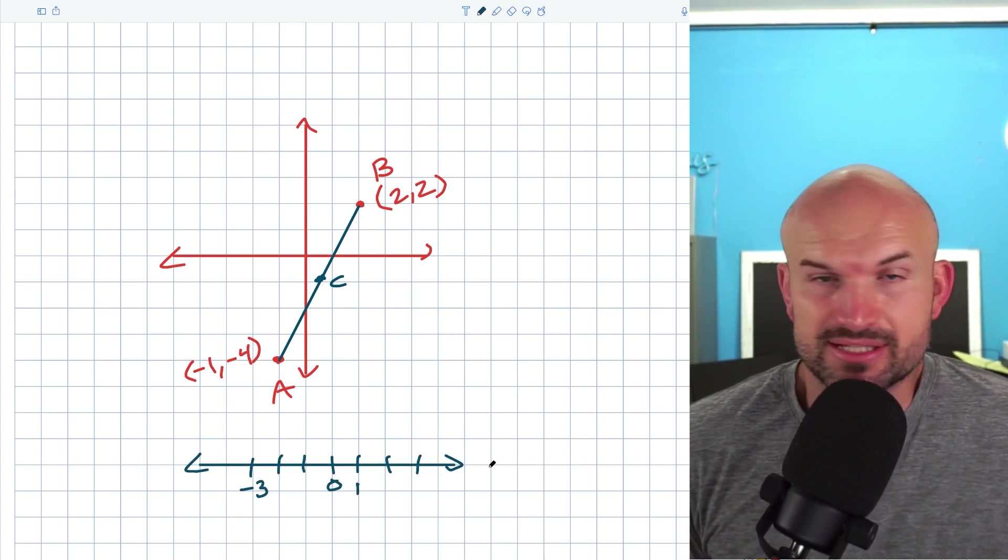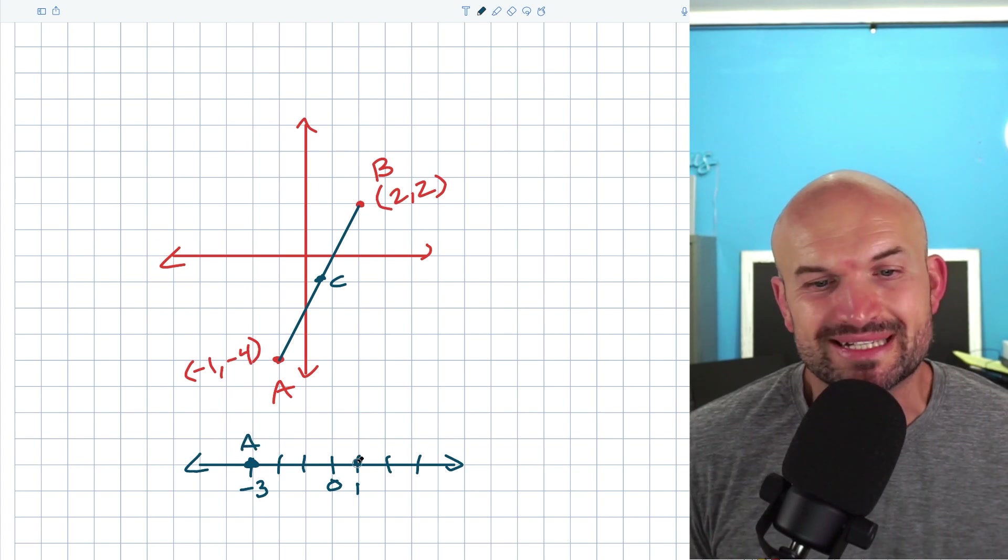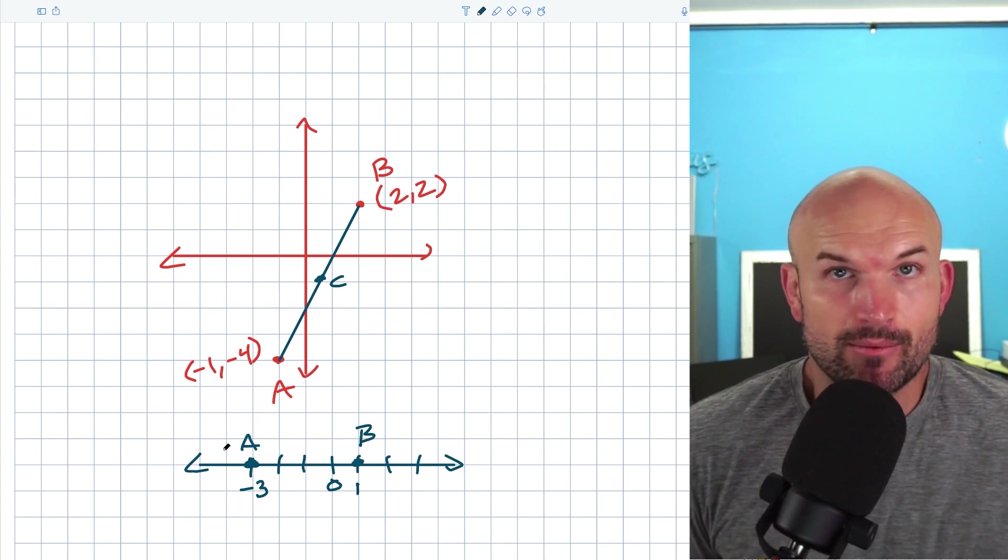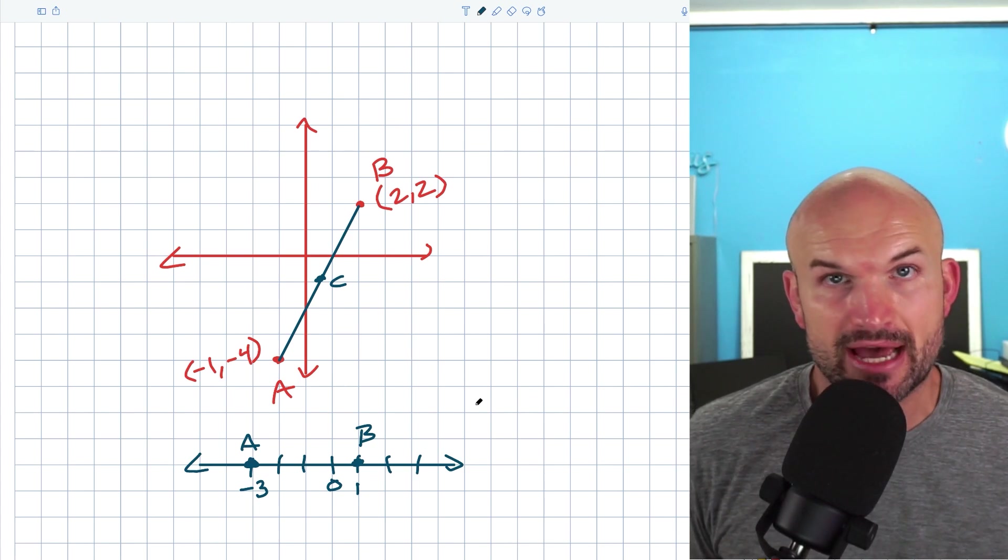So for example, in this case, we can see we just have a number line. Let's say we had a point at negative three, which we'll call A, and we had another point at one, which we called B. Now, if I wanted to find the midpoint, I wanted to find the point that's exactly in the middle, how would I basically go ahead and do that?